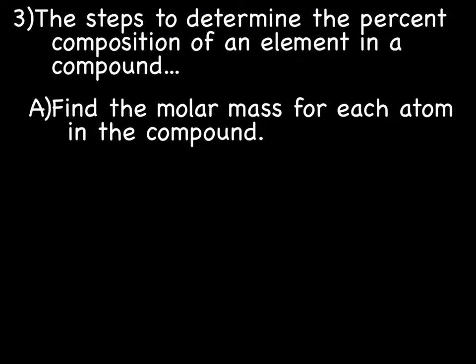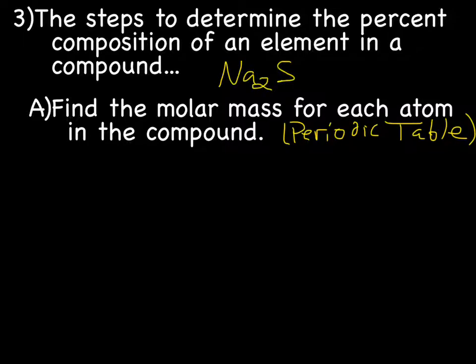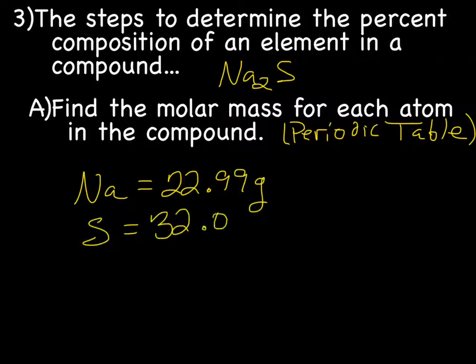Alright, let's try to figure out how to actually calculate percent composition. The steps to determine the percent composition of an element or compound. The first thing you need to do is find the molar mass for each atom in the compound. And again, you find that by looking at the periodic table. We will figure out the percent composition of Na2S. So step one says find the molar mass for each atom in the compound. So we have Na, and on the periodic table it is 22.99 grams, and we have S, and it is 32.07 grams.